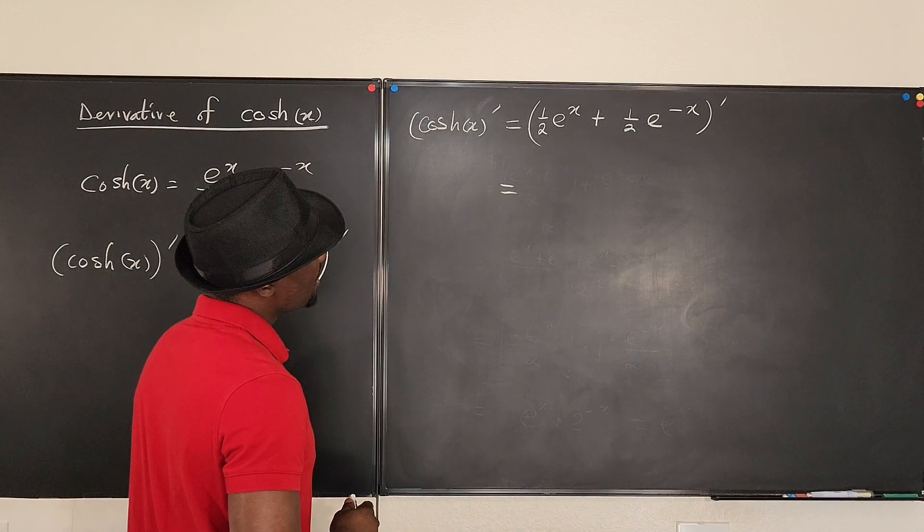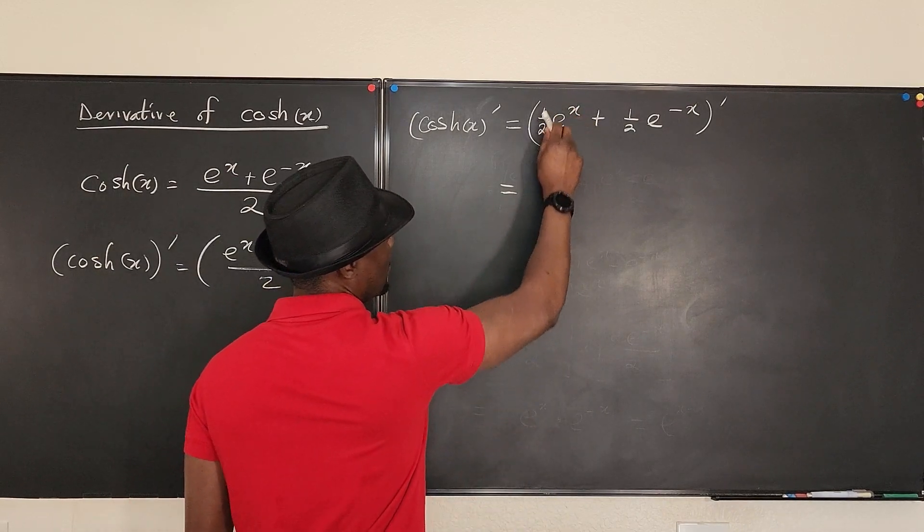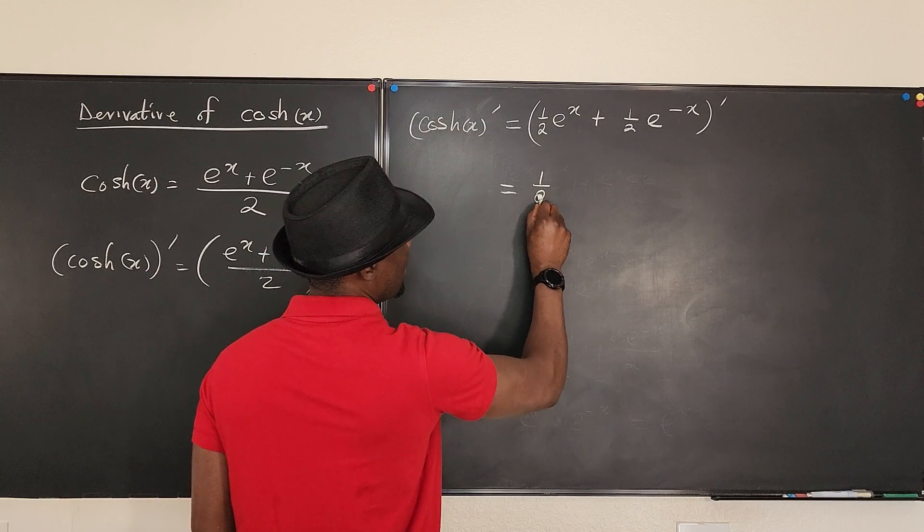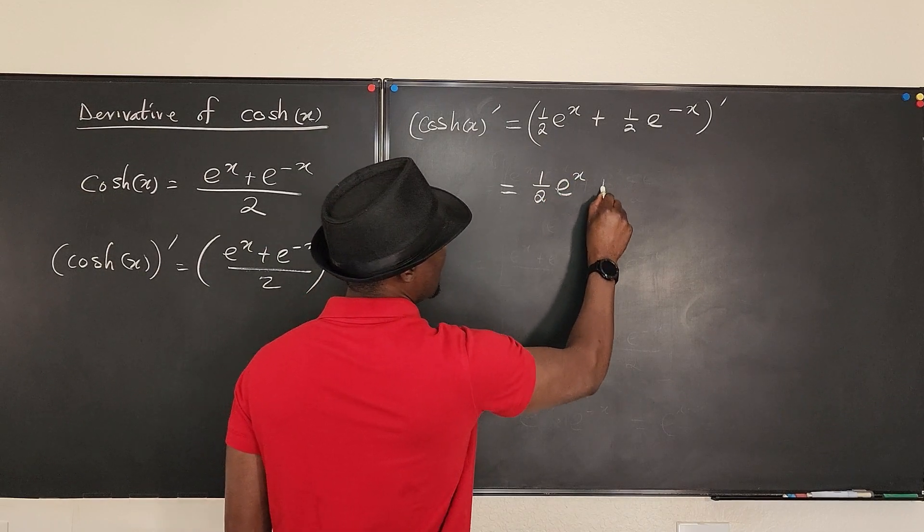What does this tell me? If I differentiate the first term, it stays the same. It's half e^x plus...